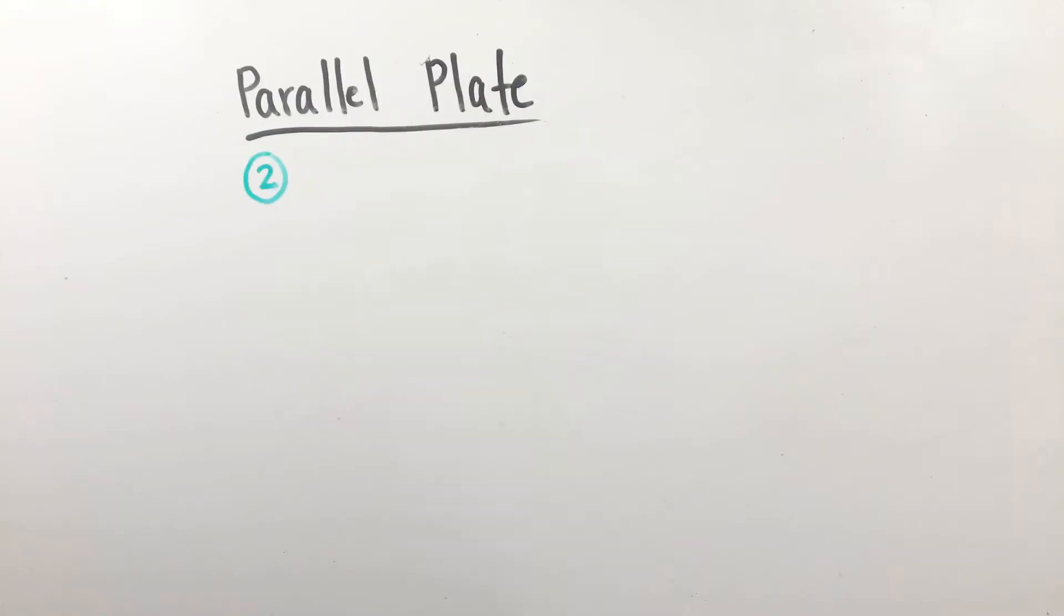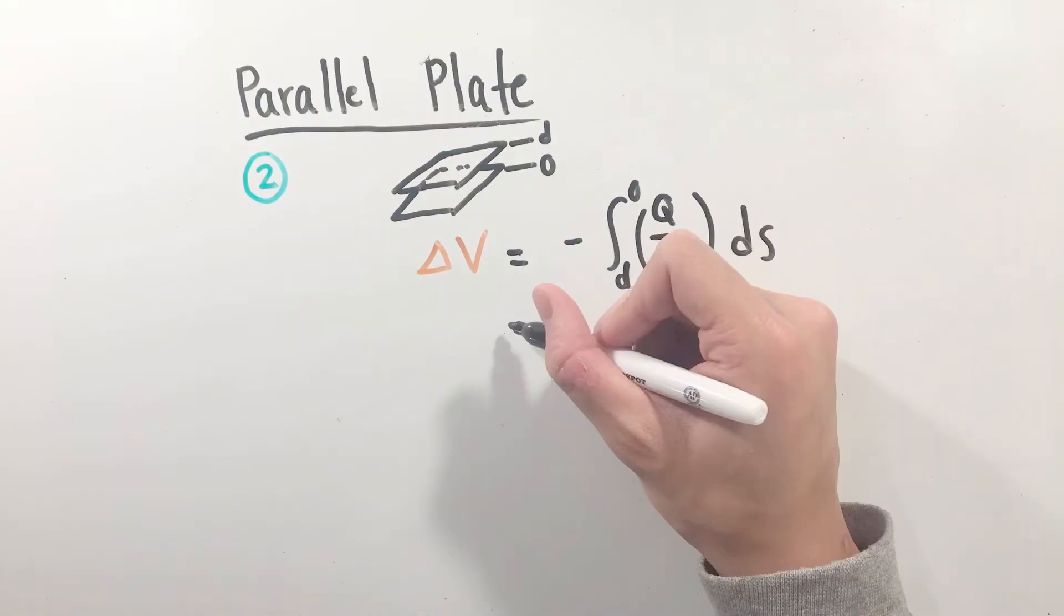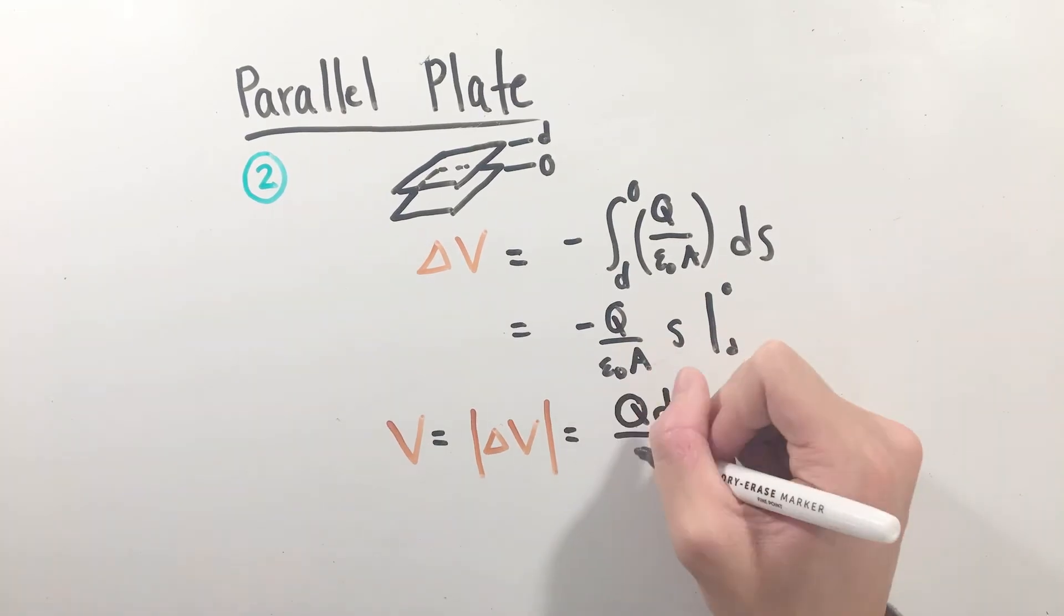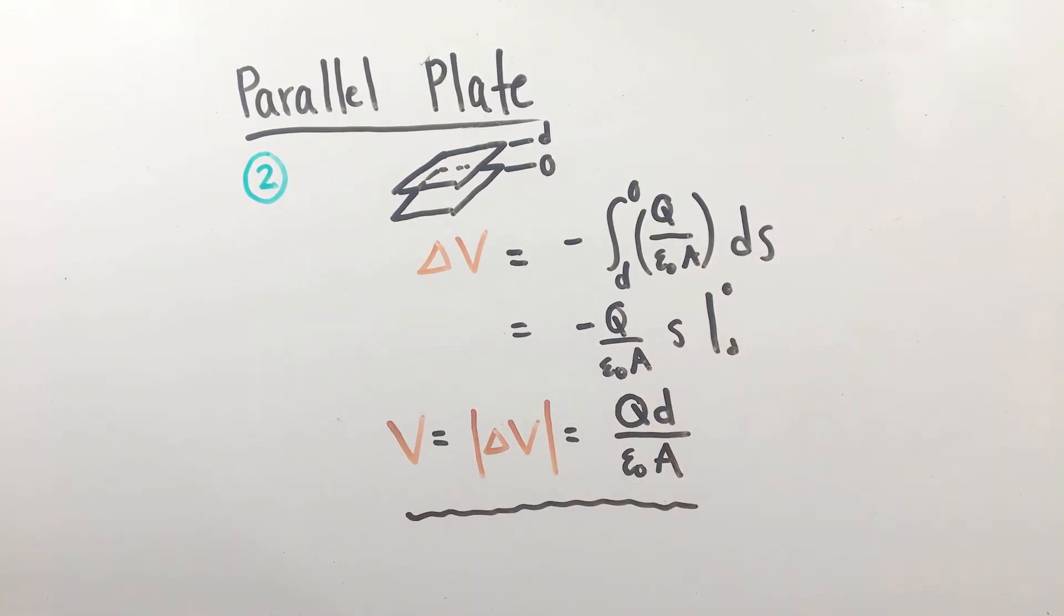To find the potential difference between these two plates, let's recall the formula delta V equals the negative integral of the dot product between the electric field and displacement vectors. Calling our starting position D and final position zero, or the origin, and noticing that our electric field equation is actually independent of displacement, we can solve for the voltage across our parallel plates.